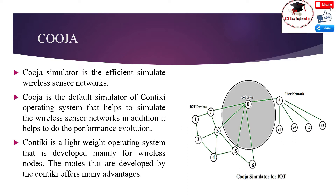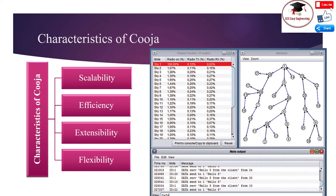Contiki is a lightweight operating system developed mainly for wireless nodes. Contiki offers a Java-based simulator called Cooja, which is used to simulate wireless sensor networks. Cooja is more flexible so that many parts of the simulator are replaceable and extendable. Parts such as simulated node hardware, plugins, and radio medium can be replaced. Key characteristics of Cooja include scalability, efficiency, extensibility, and flexibility.